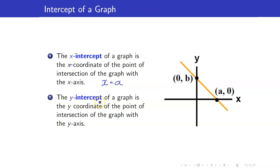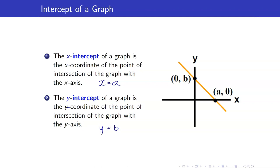The y-intercept of the graph is the y-coordinate of the point of intersection of the graph with the y-axis. So in this case, you have the point (0, b). This is the point where it intersects the y-axis, so the y-intercept is just the y-coordinate: y is equal to b.